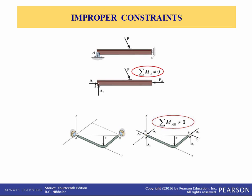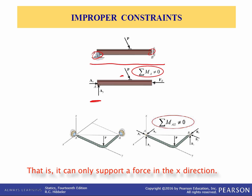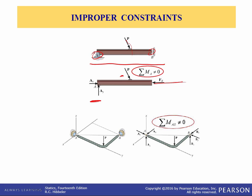Improper constraints: having the same number of unknown reactive forces as available equations of equilibrium does not always guarantee that a body will be stable under a particular loading. For example, a beam supported by a pin at A with two reaction forces and a roller at B that can only support a moment in the x direction — when the force pushes down it causes a moment about A so the beam will just rotate about A and go down. The summation of moments is not equal to zero.